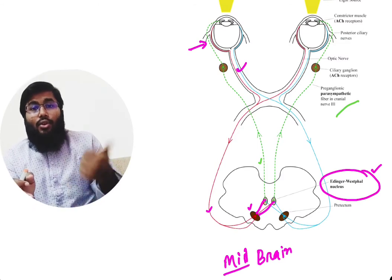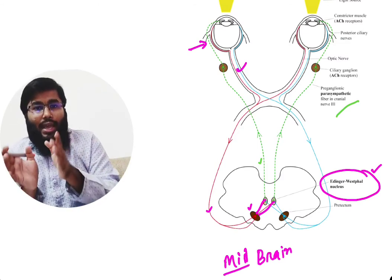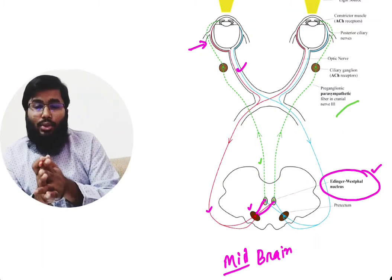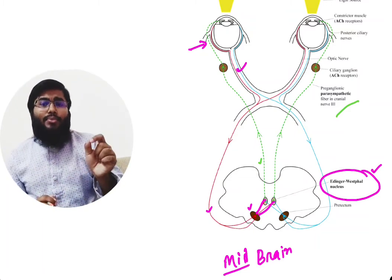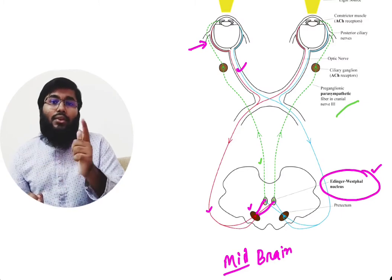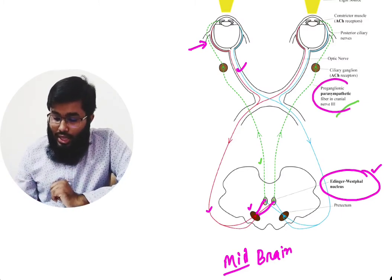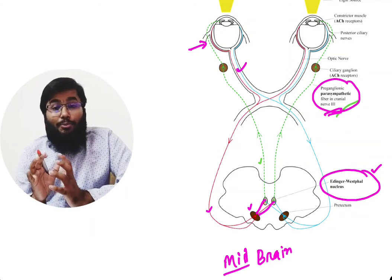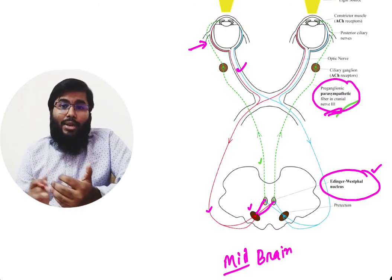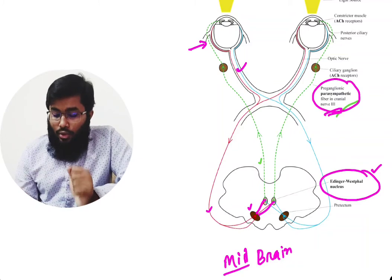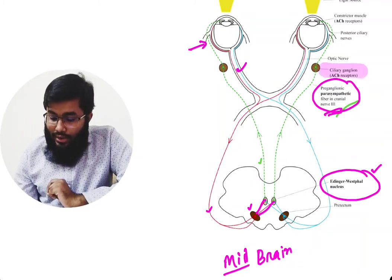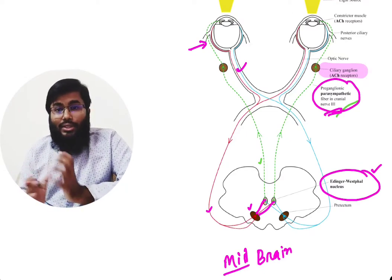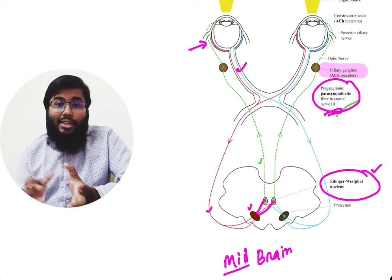When you shine a light, it causes the pretectum to be stimulated, and from that stimulation the pretectum also stimulates both Edinger-Westphal nuclei. From the Edinger-Westphal nucleus a fiber appears known as the pre-ganglionic parasympathetic fiber. This pre-ganglionic parasympathetic fiber synapses with a ganglion — the ciliary ganglion — which is an important topic we will discuss today.